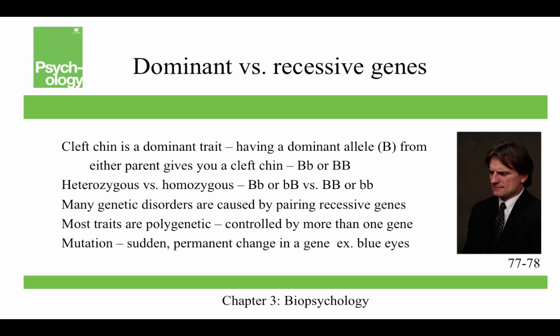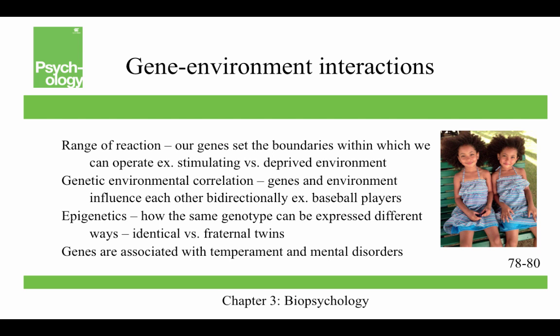You can also have a mutation, which is a sudden permanent change in a gene. For example, blue eyes — 50,000 years ago, no humans had blue eyes, and now many people do. There's actually a sex selection bias for lighter eyes of about 3% per generation, which is enormous.